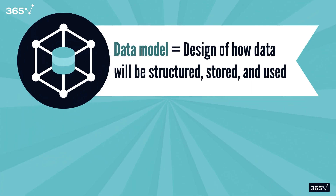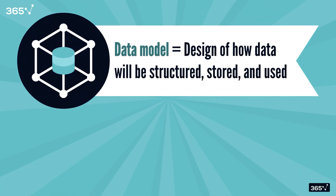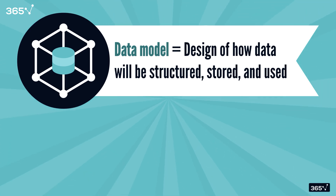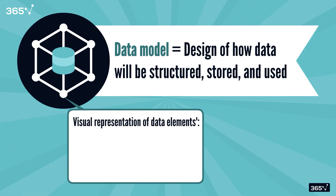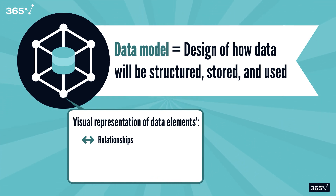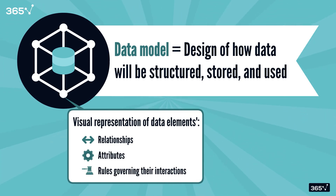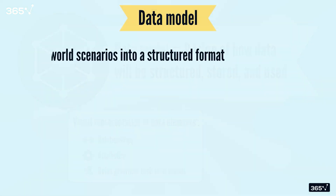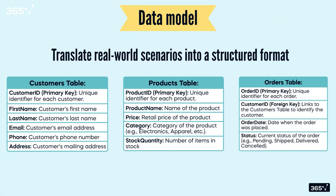A data model is a theoretical design of how data will be structured, stored, and used within a system. It's the process of visually representing the relationships between different data elements, their attributes, and the rules governing their interactions. In short, data modeling translates real-world scenarios into a structured format that databases and systems can understand before development begins.